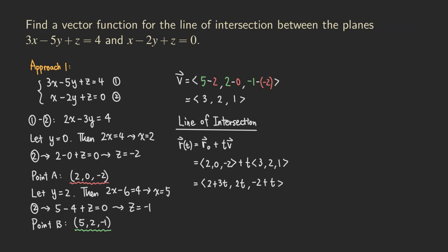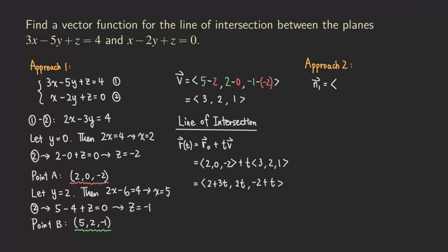Now let's look at approach 2. The idea is actually the same — the key is to find V. Here's another way to find V. We write down the two normal vectors from the planes: N₁ = (3, −5, 1) from the first plane, and N₂ = (1, −2, 1). The direction vector V is actually the cross product of those two normal vectors.